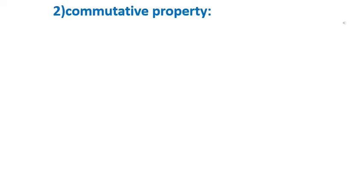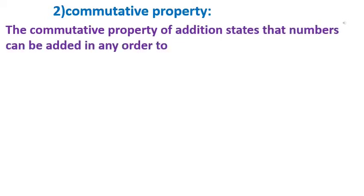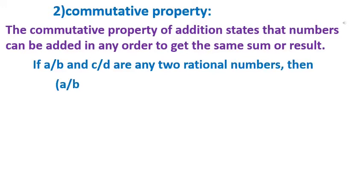Commutative property. The commutative property of addition states that numbers can be added in any order to get the same sum or result. Addition of two rational numbers is commutative. If a/b and c/d are any two rational numbers, then a/b plus c/d is equal to c/d plus a/b.